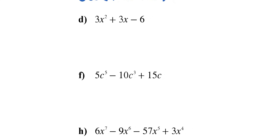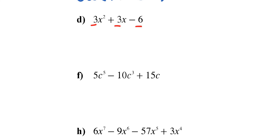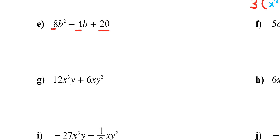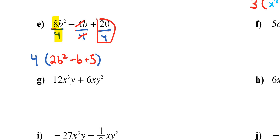For letter D with coefficients 3, 3, and -6, the biggest common divisor is 3. Dividing everything by 3: the 3's cancel giving x², then x, and 6 ÷ 3 = 2 (negative), so 3(x² + x - 2). For letter E with coefficients 8, 4, and 20, the biggest common divisor is 4. Dividing: 8 ÷ 4 = 2 giving 2B², 4 ÷ 4 = 1 giving -B, and 20 ÷ 4 = 5. Final answer: 4(2B² - B + 5).